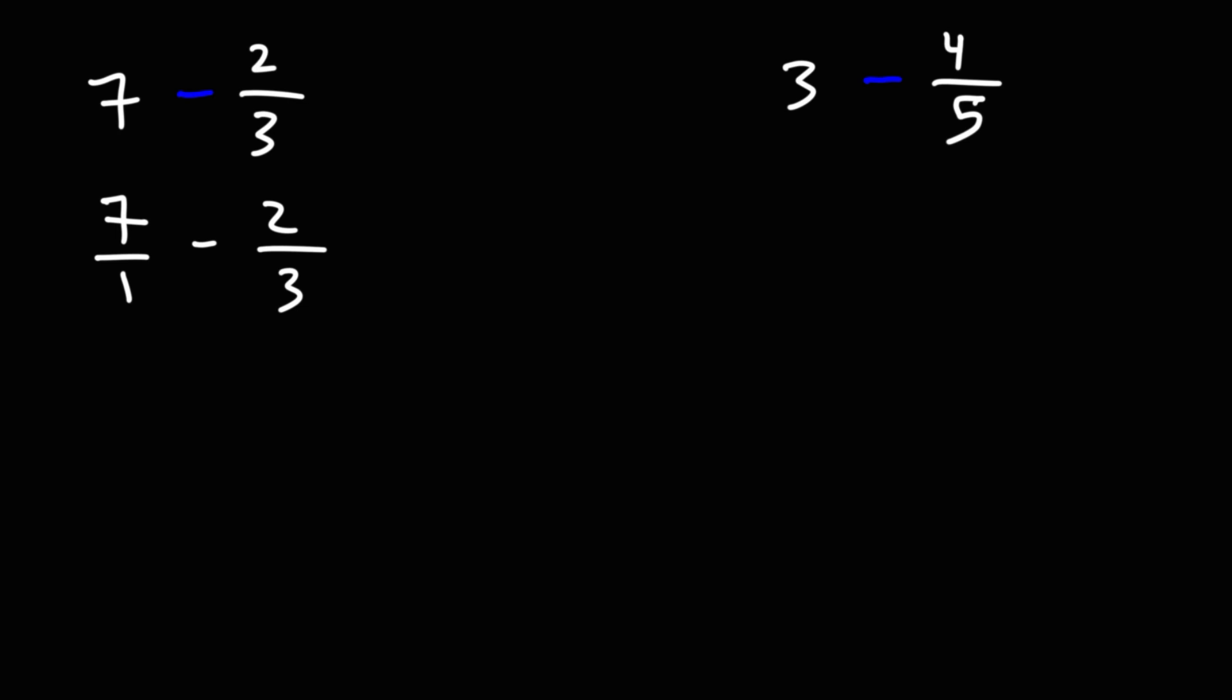Next, we need to get common denominators in order to subtract these two fractions. So I'm going to multiply the first fraction using the denominator of the second. Now I'm going to multiply across. 3 times 7 is 21. 3 times 1 is 3.